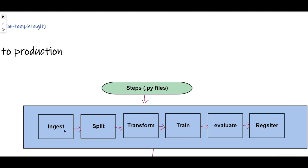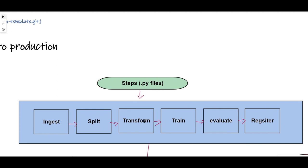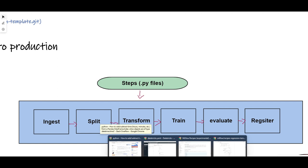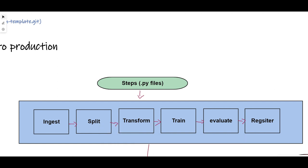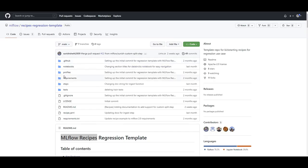Each step is actually a separate modularized Python code — for example, ingest.py, split.py, transform.py, train.py. MLflow Recipes gives you all these files, and what you need to do is go there and change them based on your project. If you want to train a regression model, go to train.py and change it. Let me show you the GitHub repository — that will be easier to explain from there.